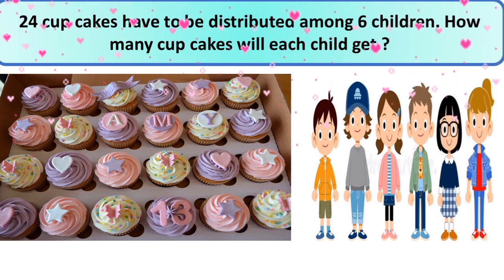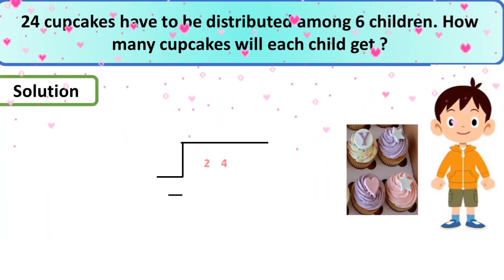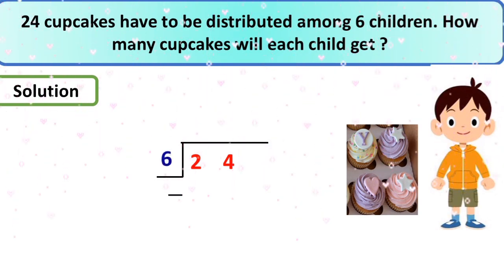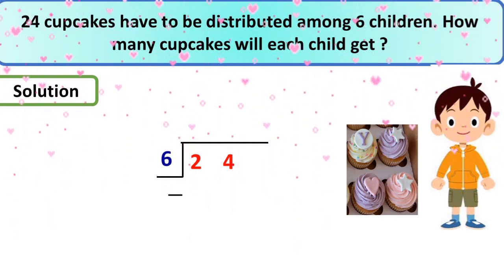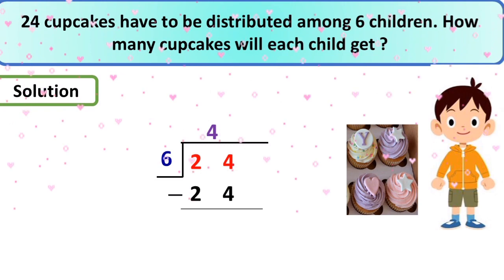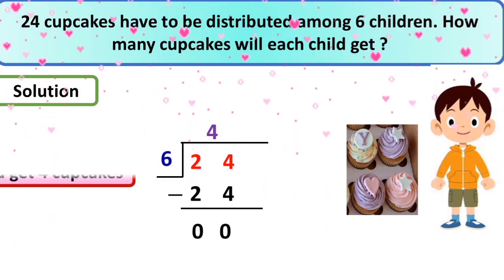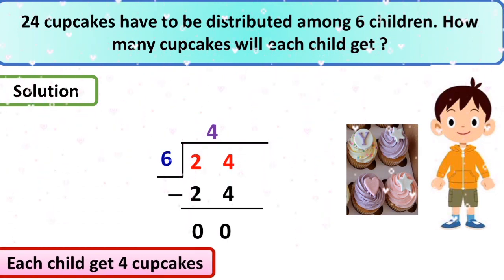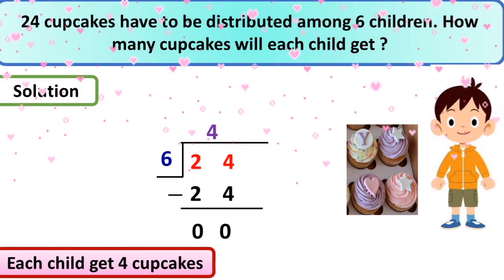So now we are going to solve the sum practically. Yes, you write 24 inside, 6 outside, and now you are going to read the times table of 6. You know 6 fours are 24. Yes, you can see here 4 is written on top of the equation. 24 minus 24 equals zero. So it means that each child gets 4 cupcakes.